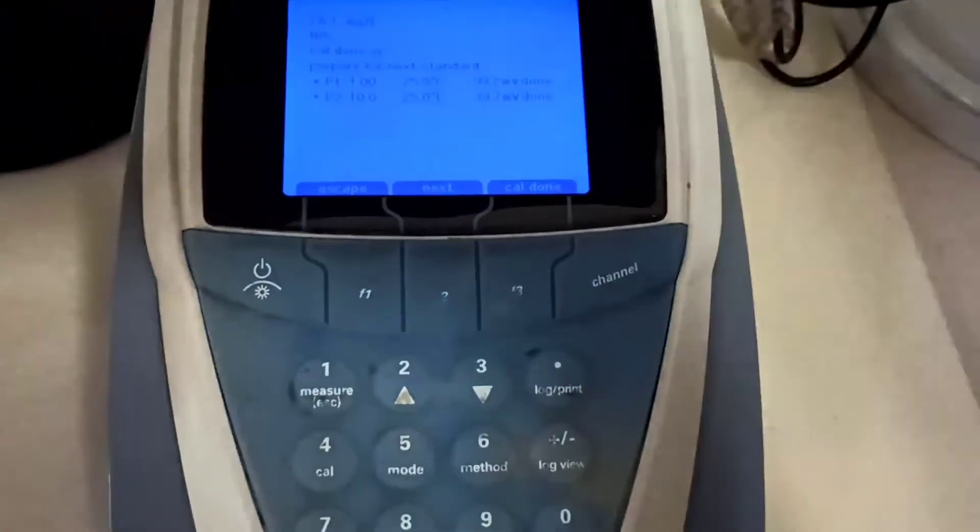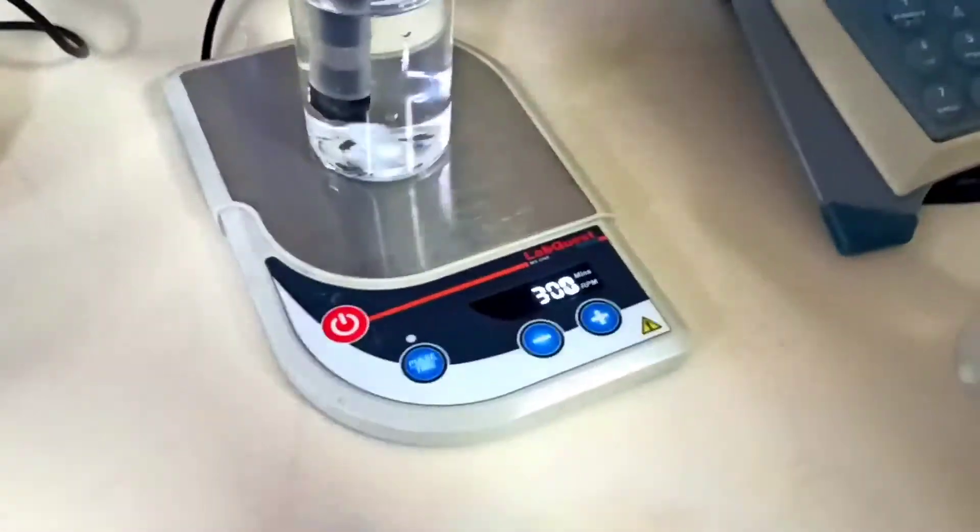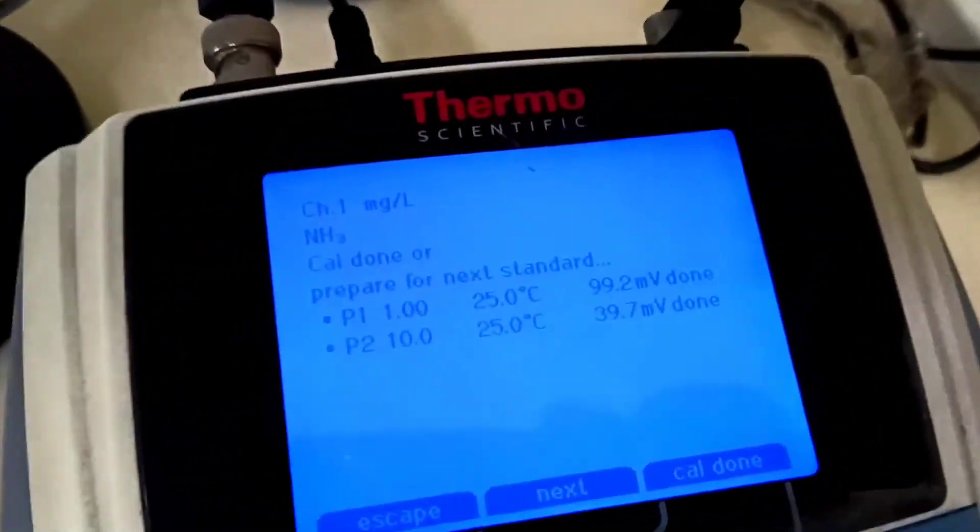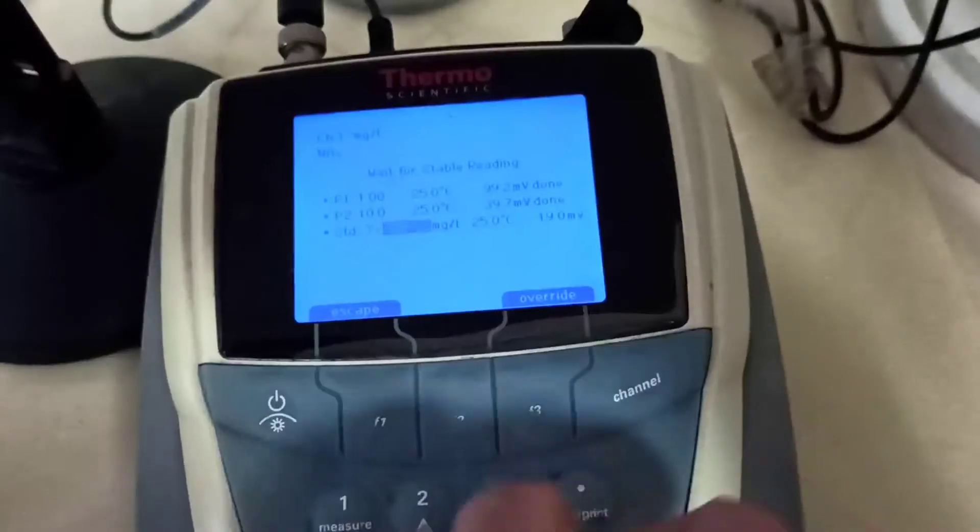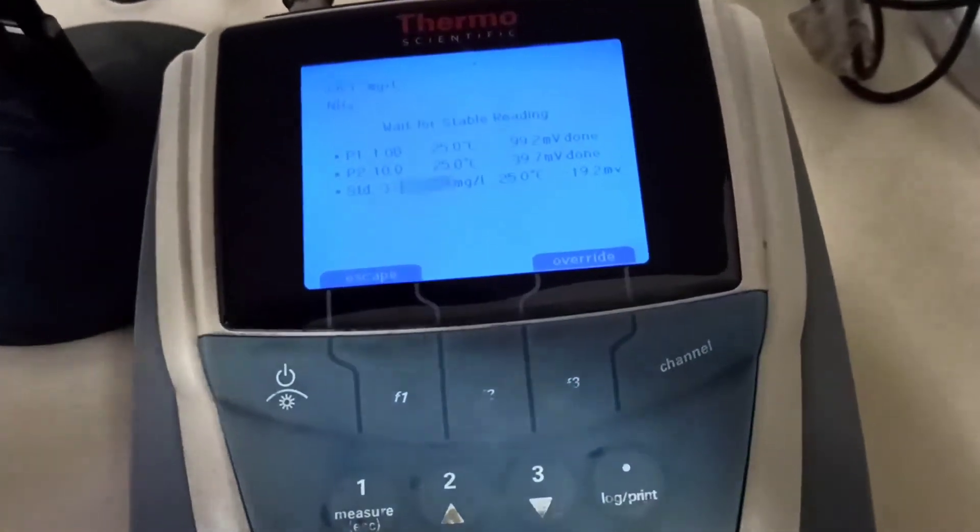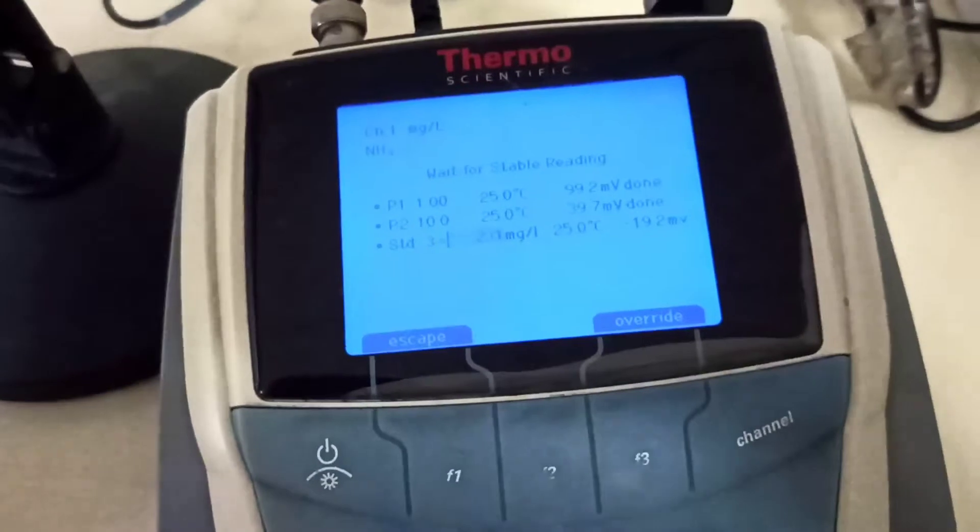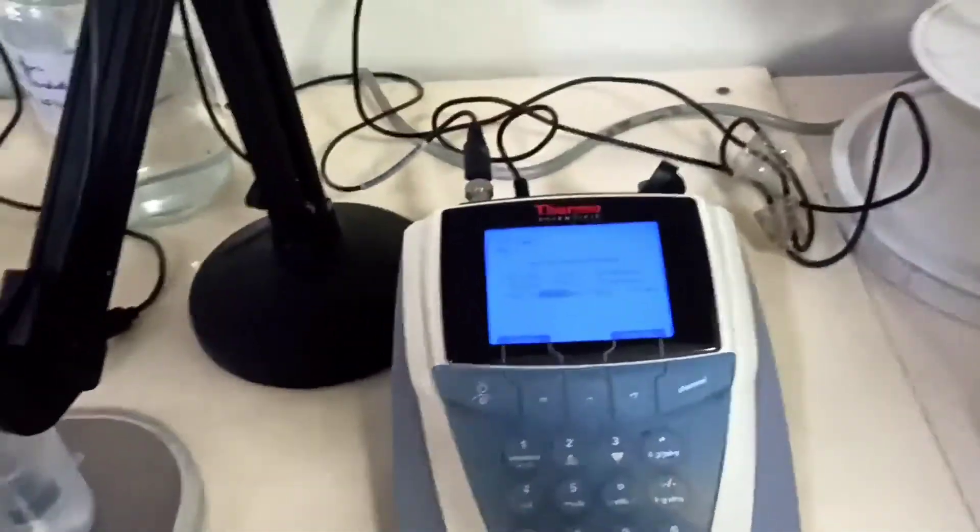We calibrate the second standard and we get 39.7 millivolt. Now we accept this reading by F2 and move to the next standard, 100 ppm. Again we are cleaning our ion selective electrode with distilled water.